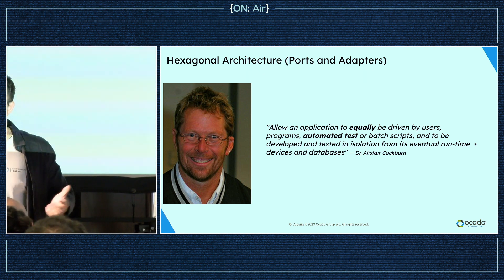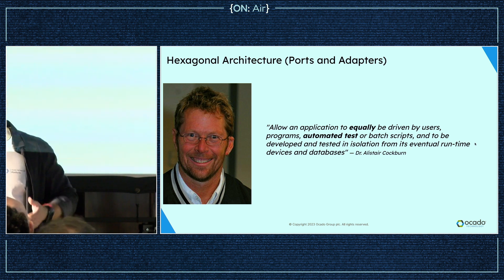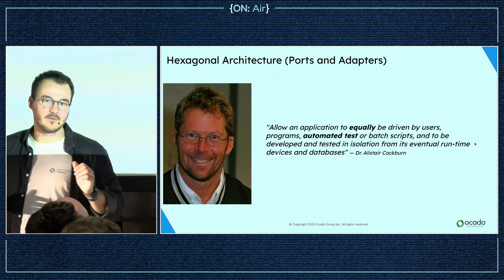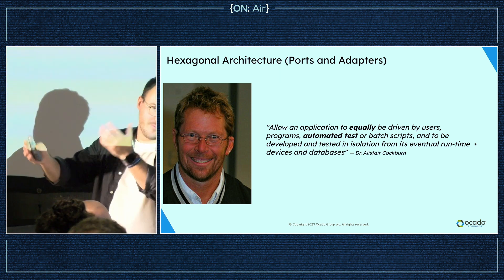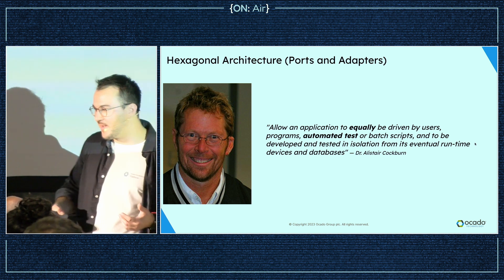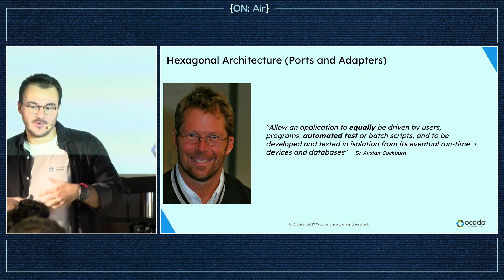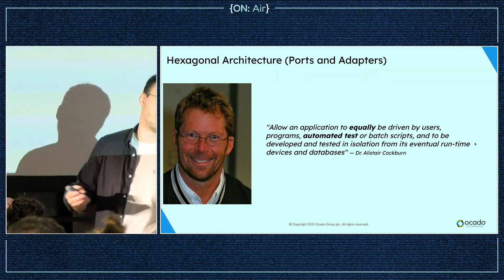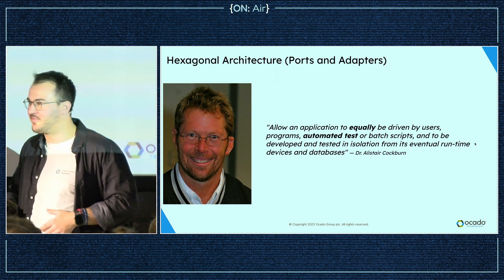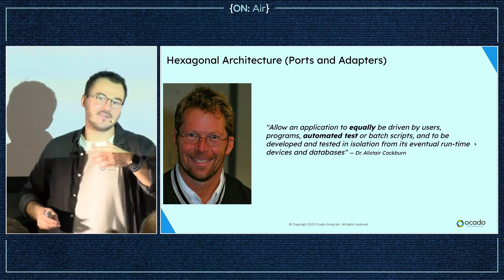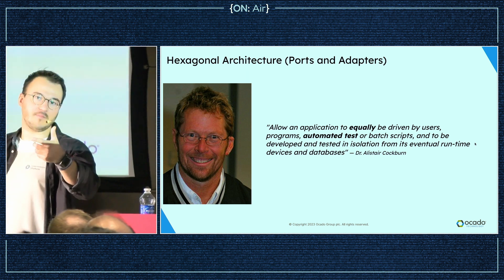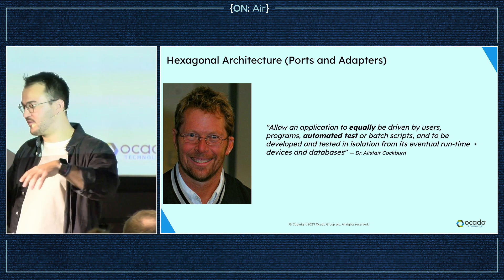And then Alistair said: can't I just mock the database? Remember, this was around 1999. Can't I just mock the database, keep developing my business rule — I have nothing to do with the database — and when you fix it, I'll just plug your library back in? Everyone laughed and said no, there's no way. So then he started thinking about it, and that's how he came up with hexagonal architecture.